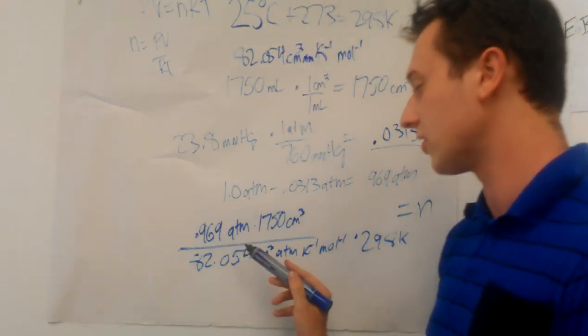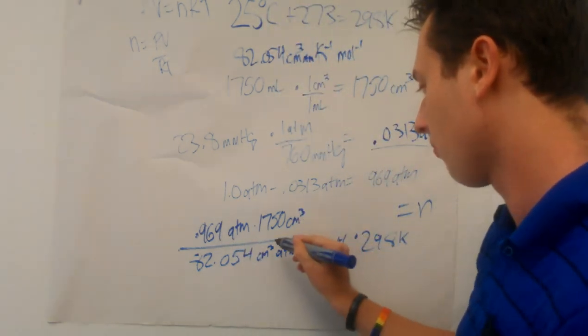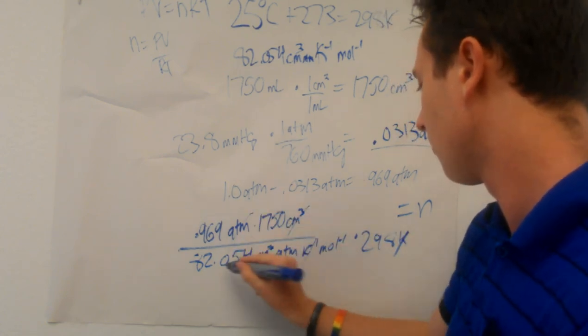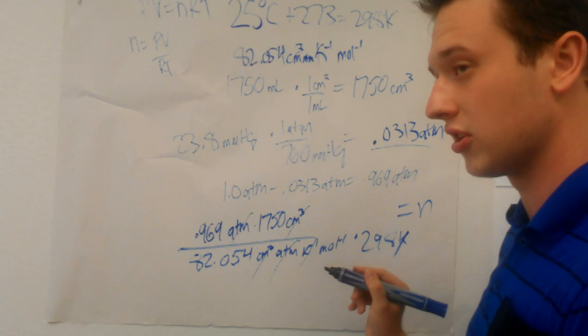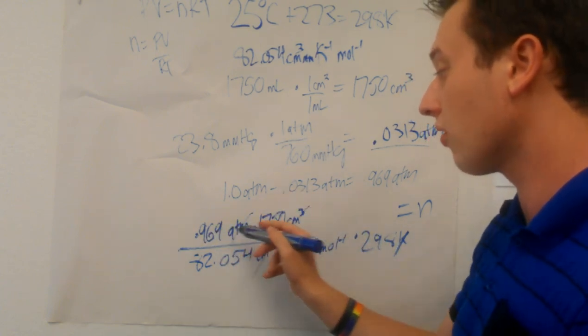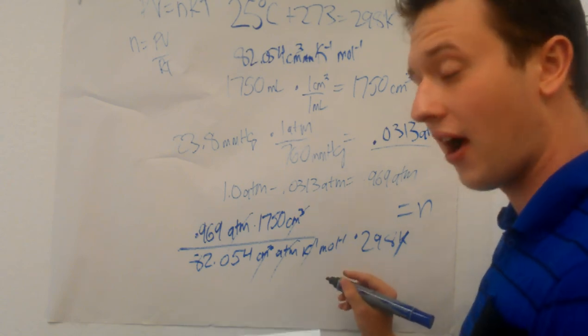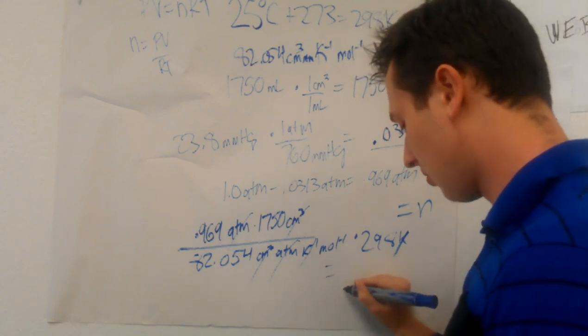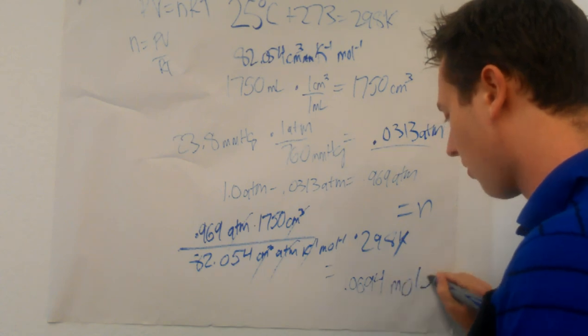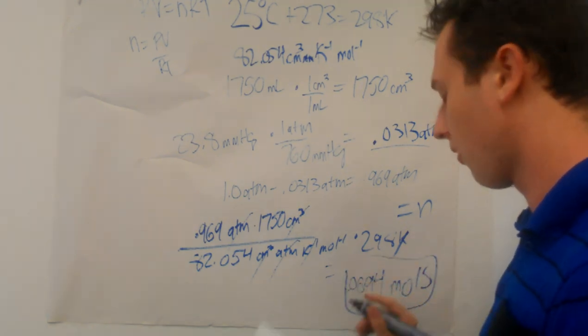Let's notice all of these units are going to cancel with the exception of mole, which is good because that was the unit we wanted. If we then plug all these numbers into a calculator, we'll find that our n equals 0.0694 moles. Yay!